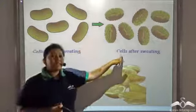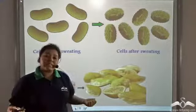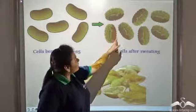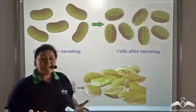But when we sweat a lot, a lot of water is diffusing out of the cells. So, the cells get a very wrinkled appearance.